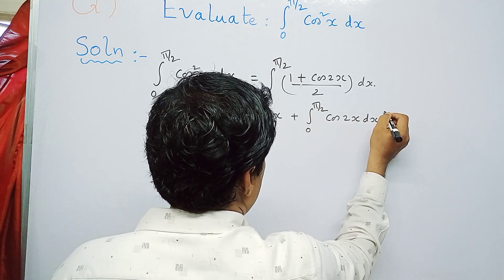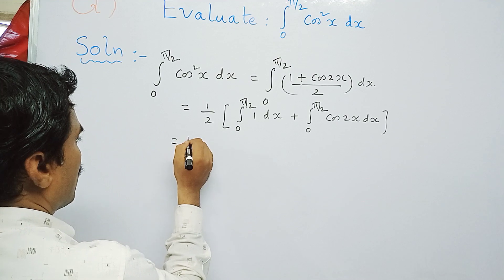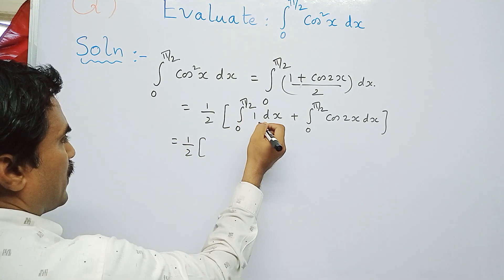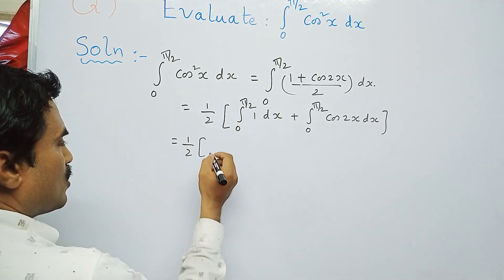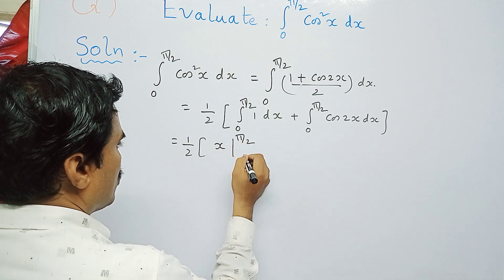So you can write this as 1/2 times. Now integral 0 to π/2 of 1 dx means what is the integration of 1 dx? That is x, so put the limits π/2, 0.